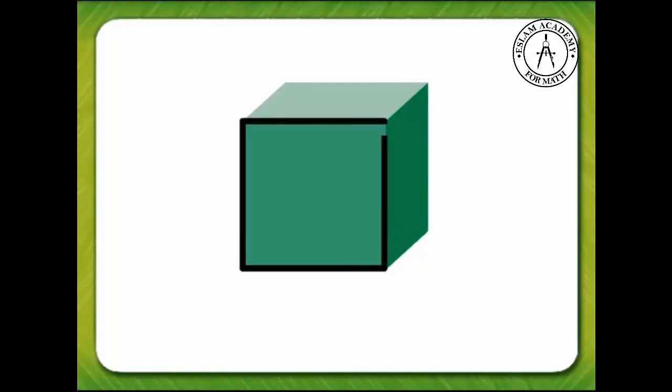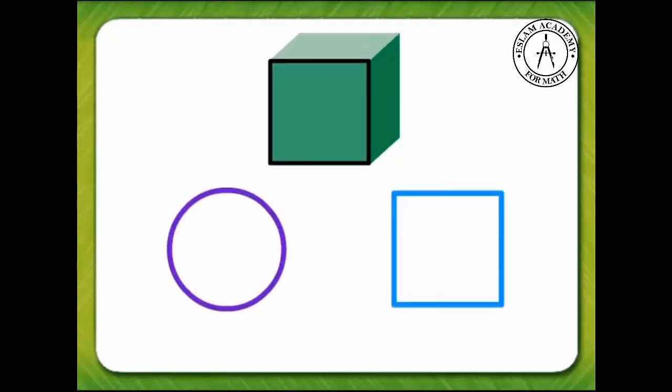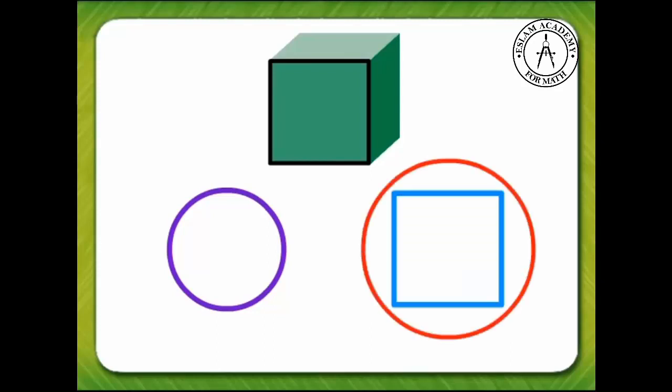Trace one face of the cube. Which of these two-dimensional shapes matches the face that we just traced? That's right, the square. So, the face of a cube is a square. Let's try a harder one.